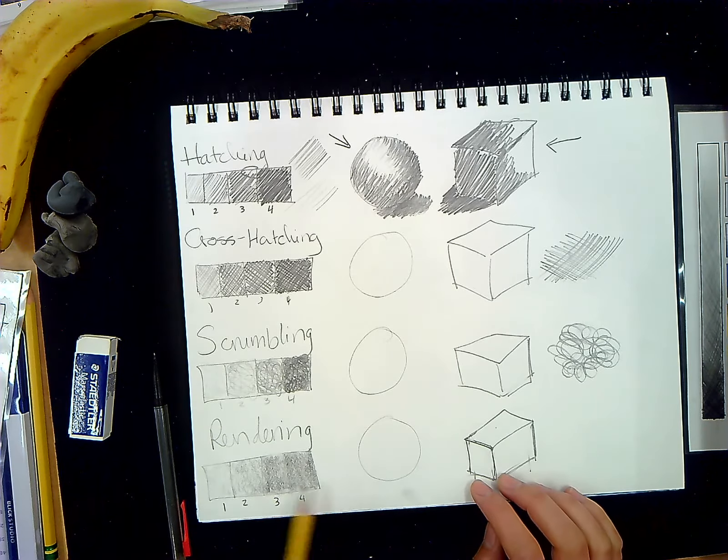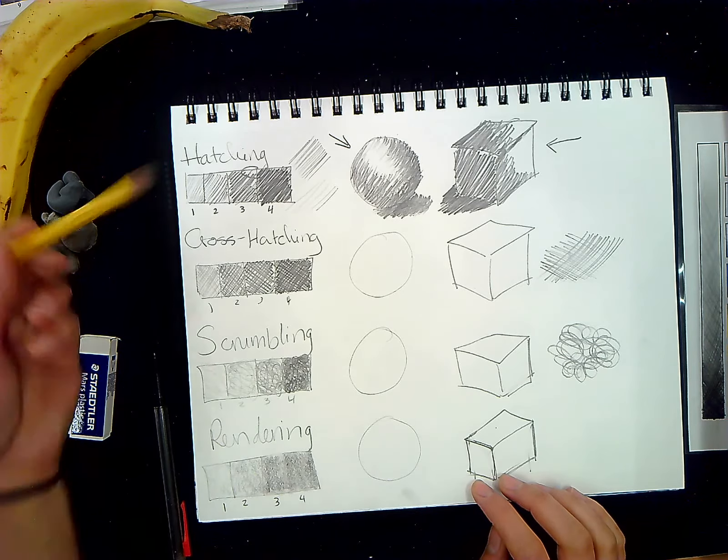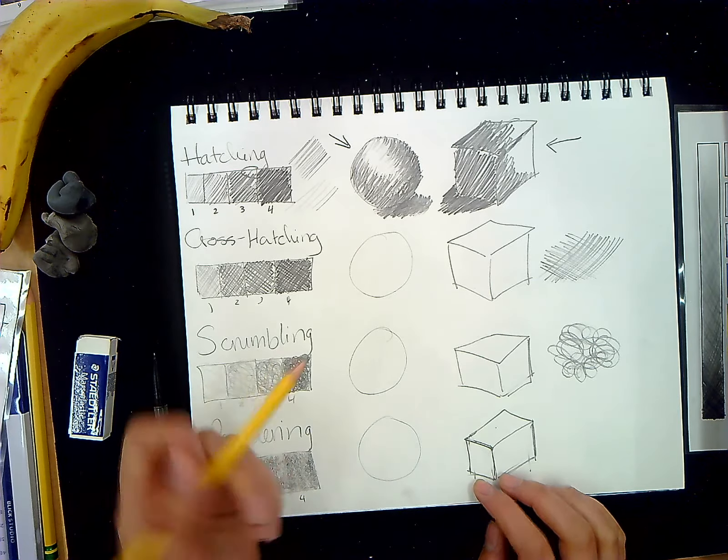So, a quick thing for rendering. Rendering is similar to hatching, cross-hatching, and scumbling, except there are two things. You are going to be using that kneadable eraser, and also you're going to be holding your pencil differently.